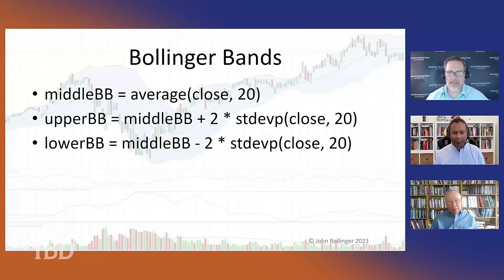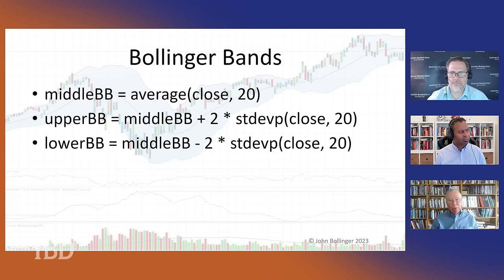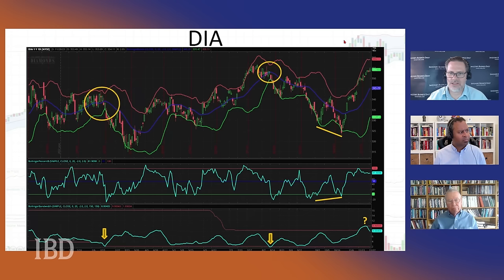You're taking two standard deviations above and below. That volatility calculation is simply the population standard deviation. The upper band is two times the standard deviation above the middle band, which is the 20-day moving average, and the lower band is two times the standard deviation below that same middle band. For stats geeks, that tells you most of the action is going to be between those bands, but it's really about where you are within the band.